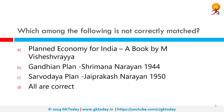Which among the following is not correct? All of them are correct. Planned Economy for India is a book by M. Visheshavaraya, Gandhian Plan is by Sriman Narayan from 1944, and Sarvadaya Plan is by Jayaprakash Narayan from 1950.